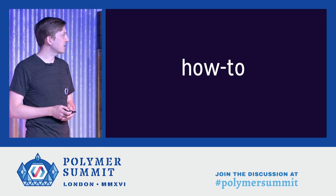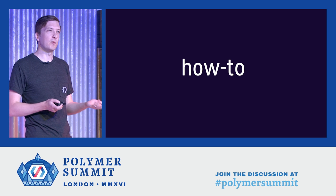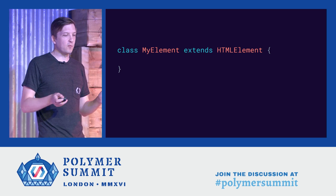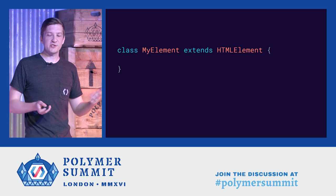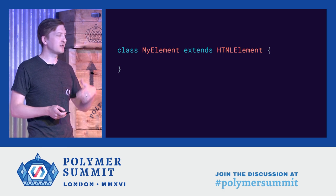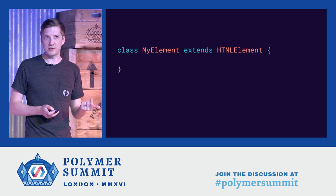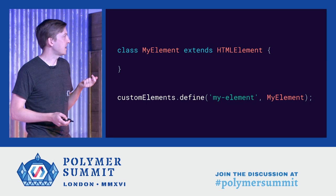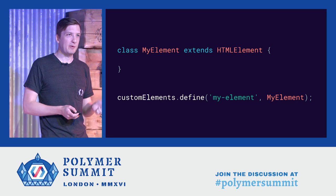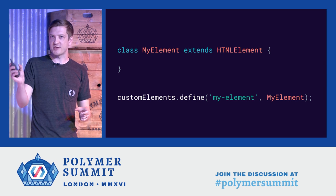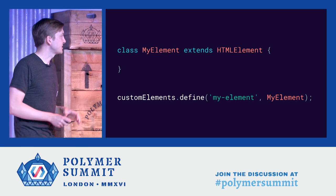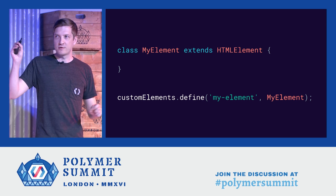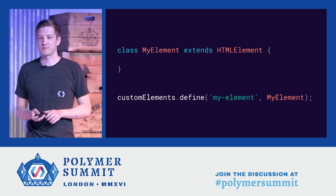Let's look at the anatomy of a V1 custom element. When you create any custom element, the first thing you do is create a class that extends from HTML element. Then you call window.customElements.define, passing it your tag name and the class you want to associate with it. From here on out, you're telling the parser: any time you see that tag, create an instance of this class.